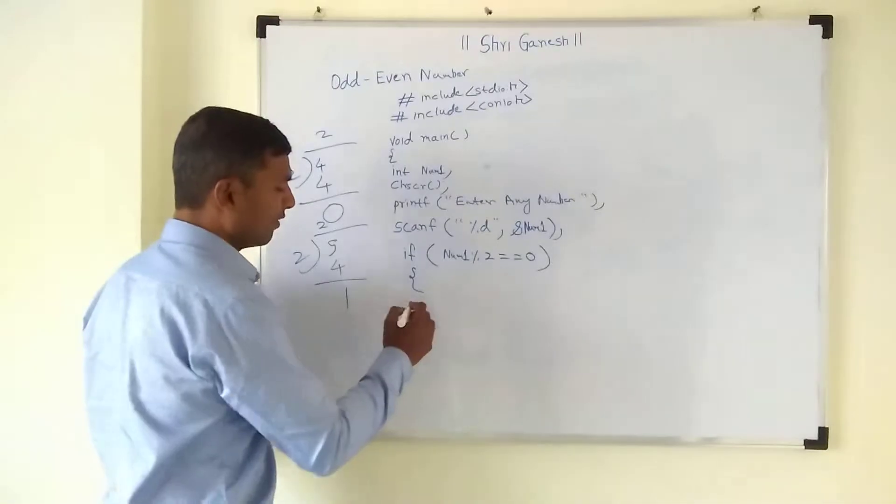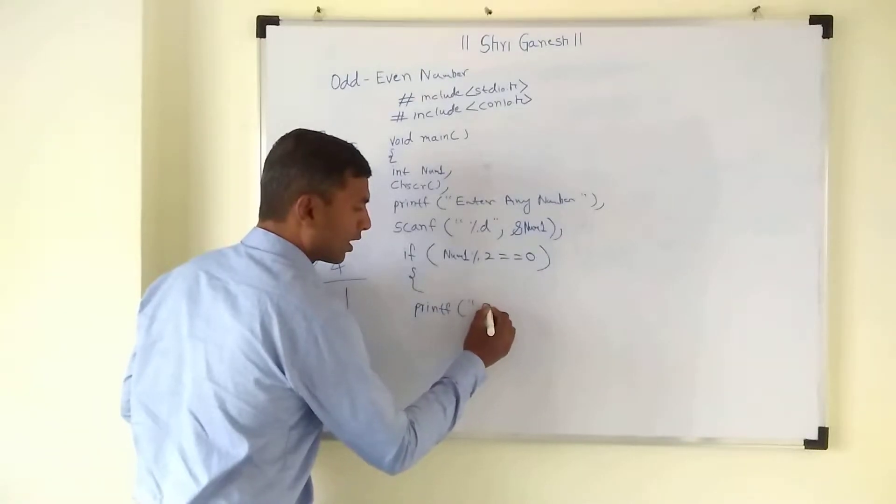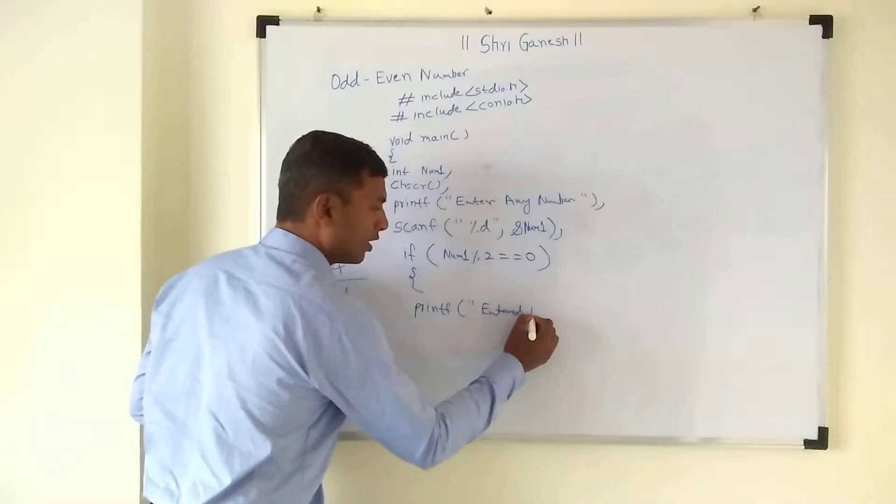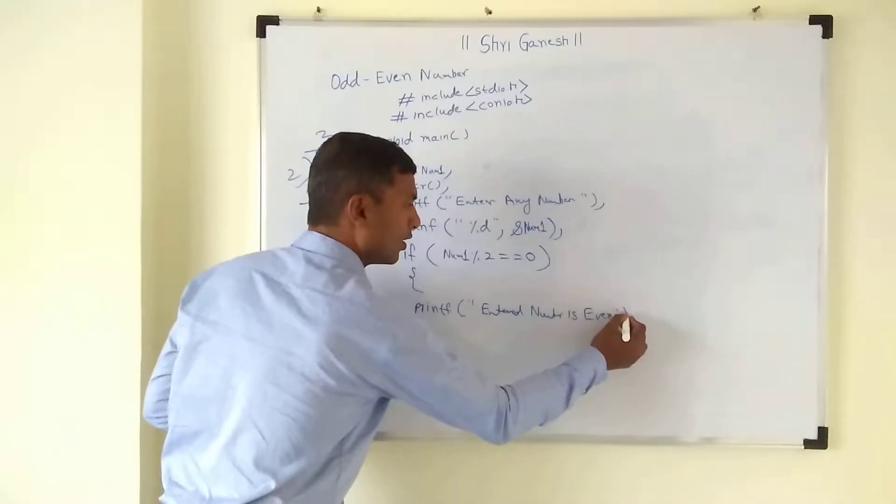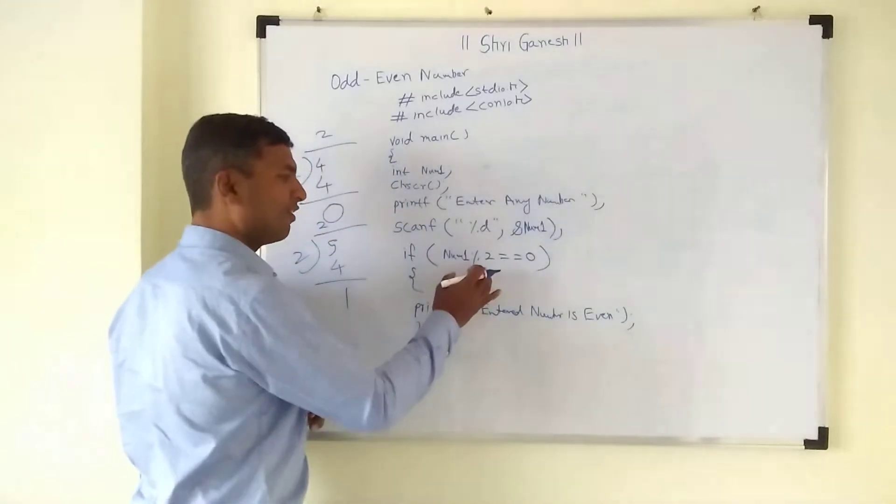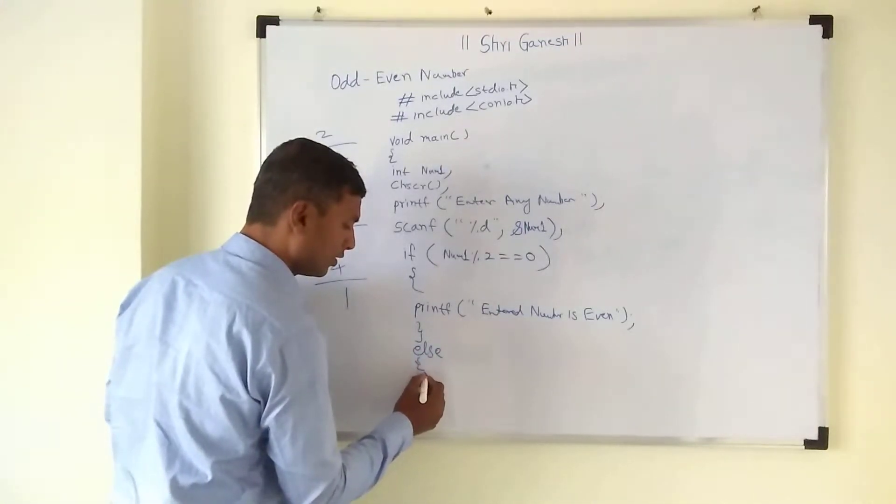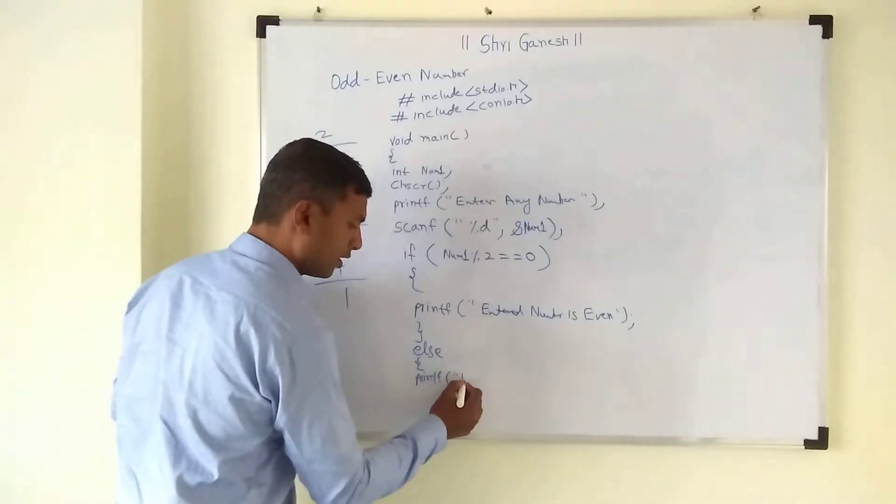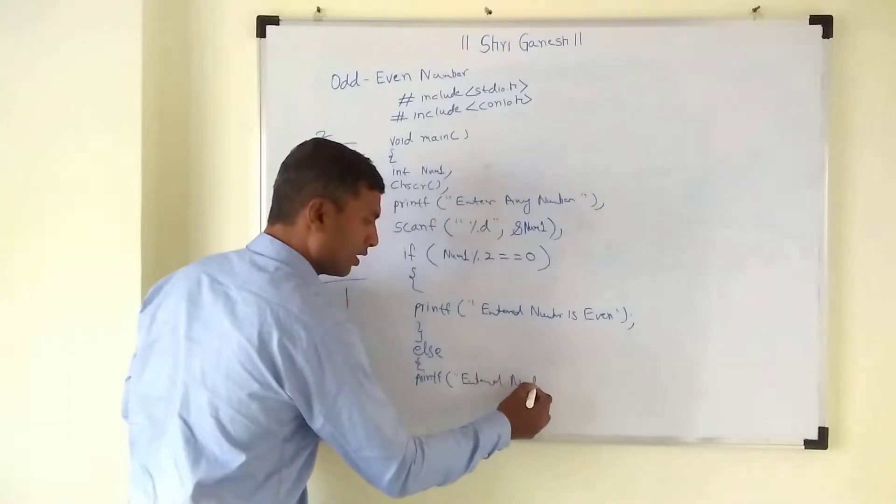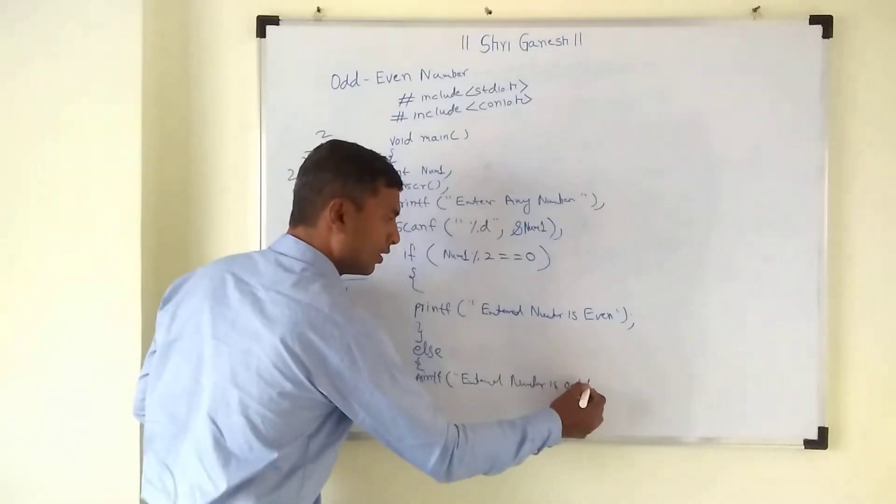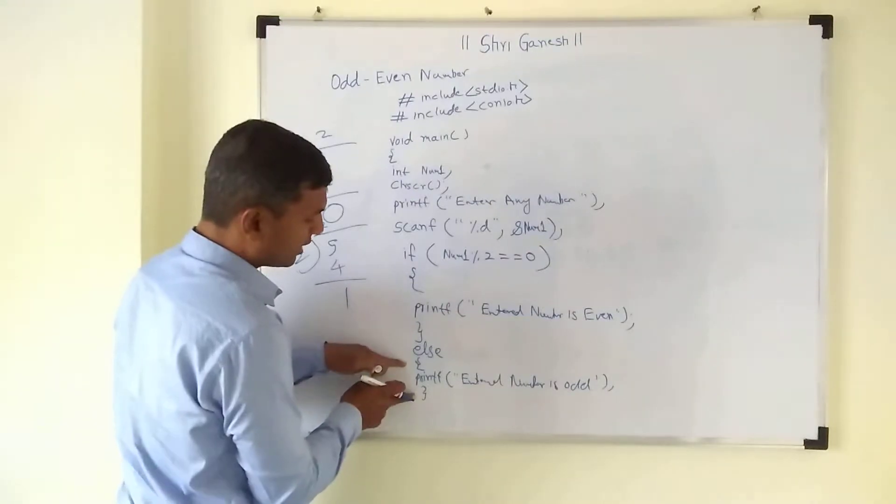If it is true, then we can print printf: entered number is even. And if it is not true, then we can put the else part. And in that we can write printf: entered number is odd. Then we will close the else part. If we have closed here, else part we have closed here.